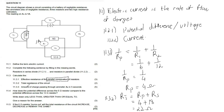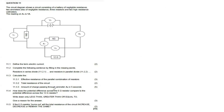Now 11.3.3 asks for the amount of charge passing through ammeter A2 in 5 seconds. In order to calculate that, we'll first start by calculating the voltage across the 6 ohm resistor, and then this will lead us to the answer for 11.3.3.